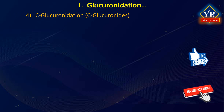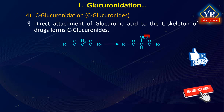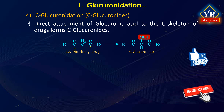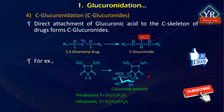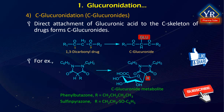C-glucuronidation: direct attachment of glucuronic acid to the carbon skeleton, that is relatively acidic carbons of drugs, forms C-glucuronides. This reaction has been seen in humans for drugs possessing a 1,3-dicarbonyl group. For example, conjugation of phenylbutazone and sulfinpyrazone yield the corresponding C-glucuronide metabolites.